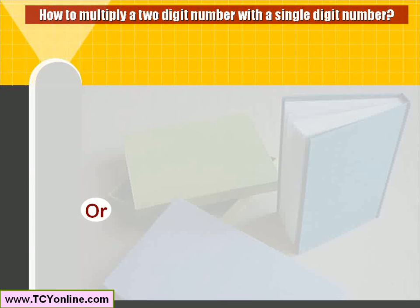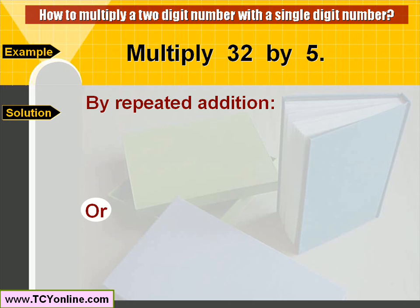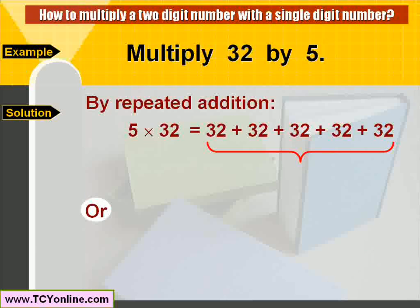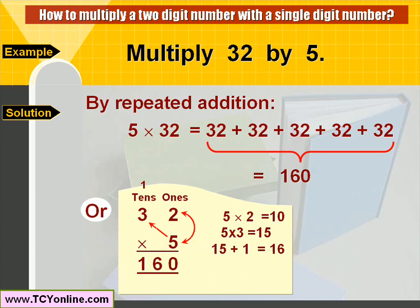Now let's learn how to multiply a two-digit number by a single-digit number. For this, let's take an example where we need to multiply 32 by 5. We can multiply this by repeated addition, which means add 32 itself 5 times, giving a total of 160. There is also another way to do this — simple multiplication.